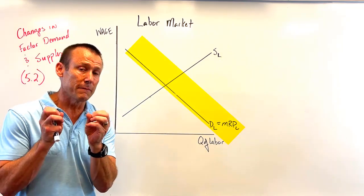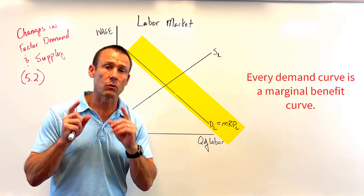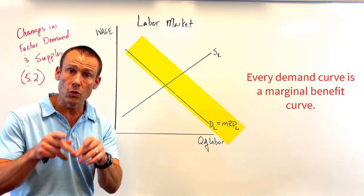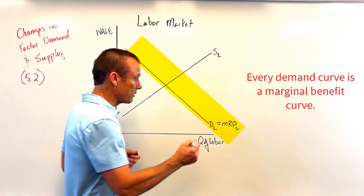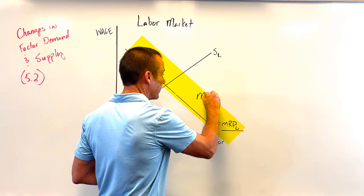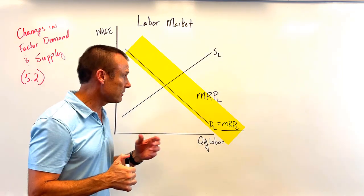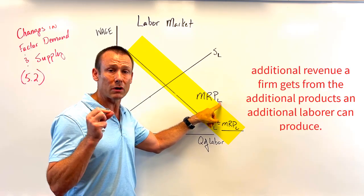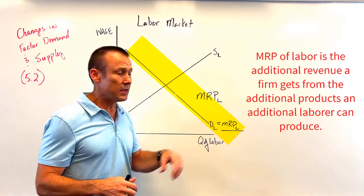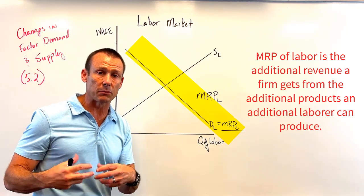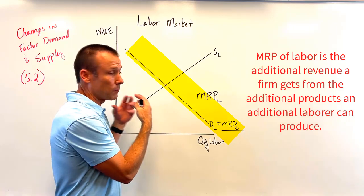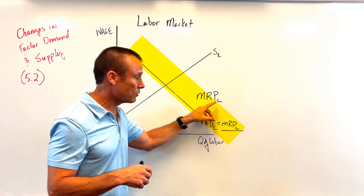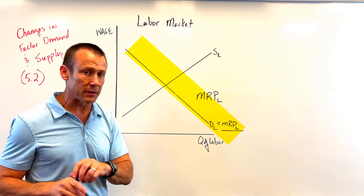On the demand for labor — that's the businesses. Every demand curve in the world is a marginal benefit curve. So what we're talking about is the marginal benefit of labor to businesses. What is that marginal benefit? It is the marginal revenue product of labor — the additional revenue that we get from the additional products one more labor is going to provide to a firm. We're summing the marginal revenue product of labor across all the different firms that make up the labor market.